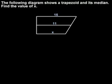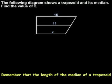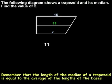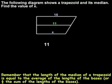To find the value of x, remember from the previous example that the length of the median of a trapezoid, in this case 11, is equal to the average of the lengths of the bases, or one-half the sum of the lengths of the bases, which in this case is one-half times parentheses 15 plus x.